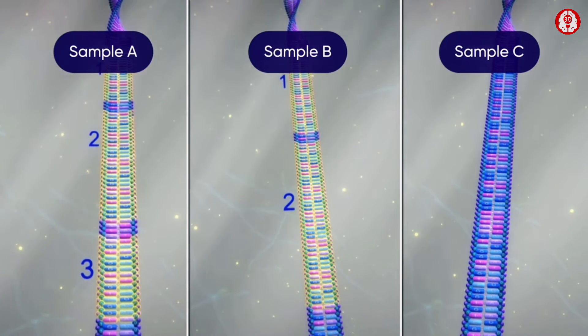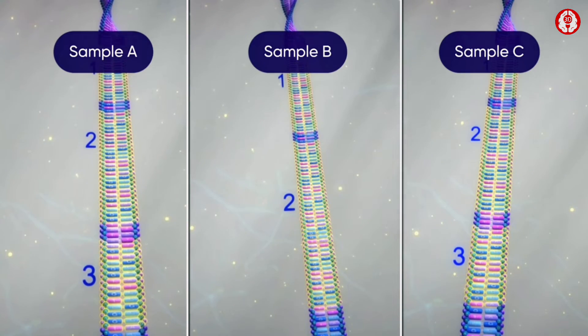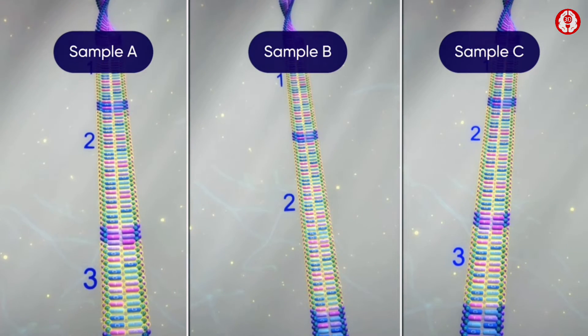Similarly, we can see two highlighted regions of repeats in sample B and three highlighted regions of repeats in sample C.